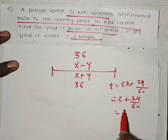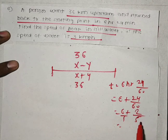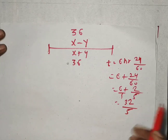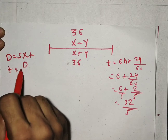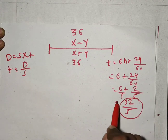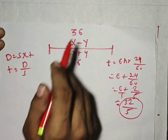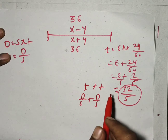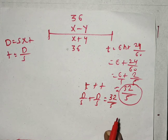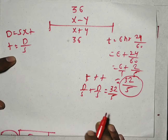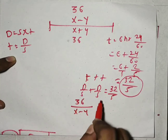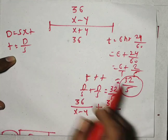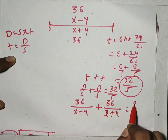6 hours 24 minutes = 6 + 24/60 = 6 + 2/5 = 32/5 hours total. Using time = distance/speed, the equation is 36/(x−y) + 36/(x+y) = 32/5. Substituting y = 3: 36/(x−3) + 36/(x+3) = 32/5. Expanding numerator: 36x + 108 + 36x − 108 = 72x, with +108 and −108 cancelling. The denominator (x−3)(x+3) = x²−9. So 72x/(x²−9) = 32/5.